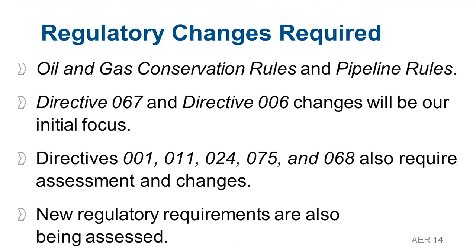In order to follow through with the policy direction from the government, the AER requires rule changes to support policy implementation. These rule changes will provide the AER the ability to collect financial information and keep it confidential, supporting the implementation of the LCA, and to set specific closure targets as part of the inventory reduction program. The first step is to revise Directive 67, which outlines requirements for eligibility for acquiring and holding energy licenses and approvals — these revisions will include the requirement to submit financial information. The second step is to revise Directive 6 to enable the transition from the Licensee Liability Rating (LLR) to the LCA.